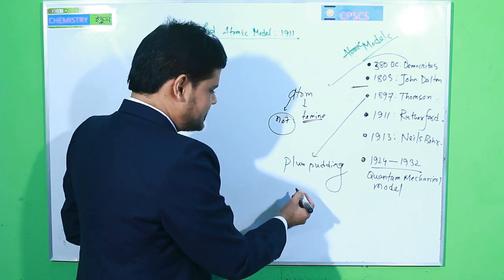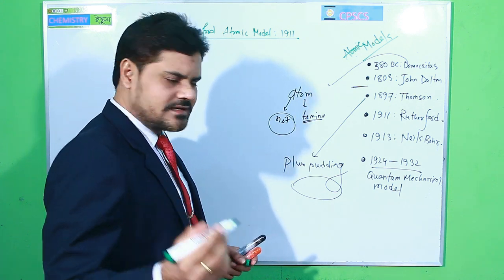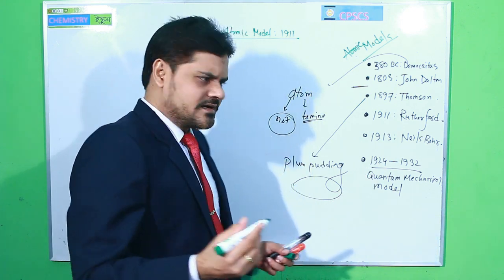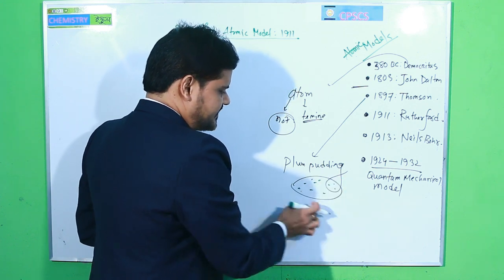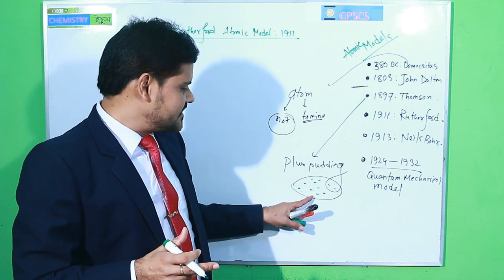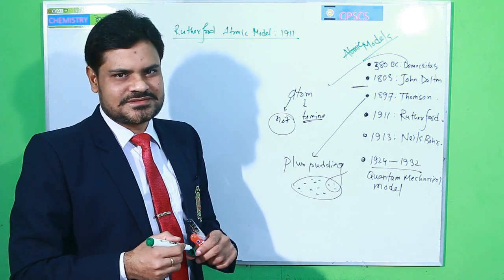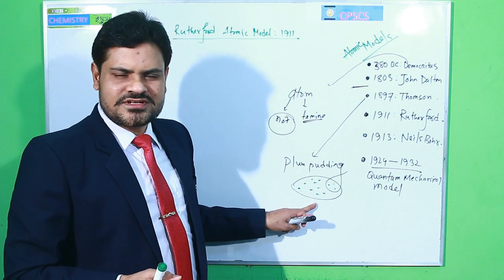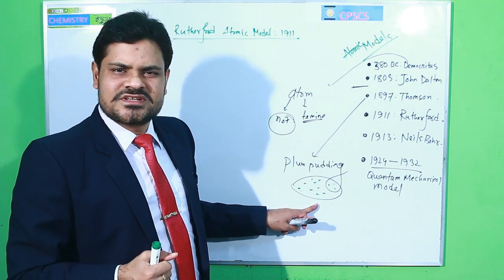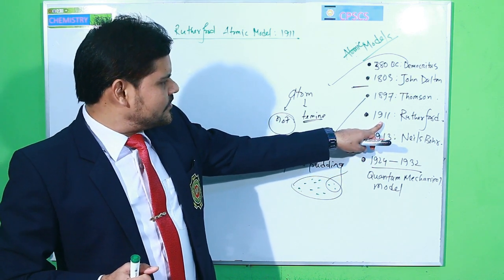Thomson described the atom like a watermelon: the seeds scattered inside represent the electrons, and the outer surface is the positive source. To verify whether this information was correct or wrong, Mr. Rutherford in 1911, about 13 years later, performed the alpha particle scattering experiment.